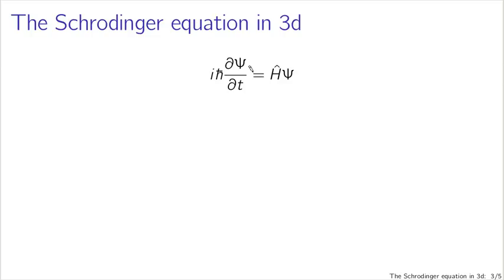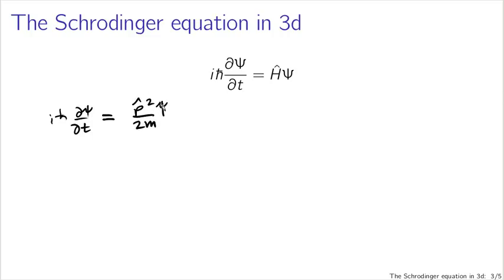The Schrödinger equation also converts to 3D more or less how you would expect. This is the Schrödinger equation in all its generality: i h-bar times a partial derivative with respect to time equals a Hamiltonian operator acting on our wave function. If I expand out what the Hamiltonian actually is in terms of general operators, I get p-hat squared over 2m acting on the wave function, plus the potential energy v as a function of three dimensions — v of x, y, and z — multiplied by the wave function.